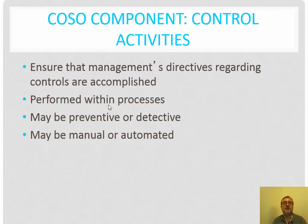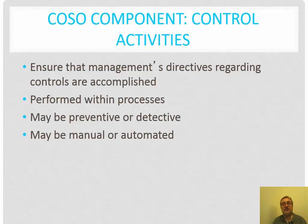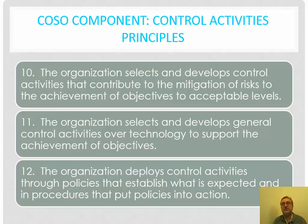Control activities ensure management directives regarding controls are accomplished. They are performed within processes and may be preventive or detective, and may be manual or automated. A preventive control essentially prevents bad things from happening, while a detective control identifies these events after they have taken place. From a control perspective, we need to understand how each of these can be incorporated within the organization.